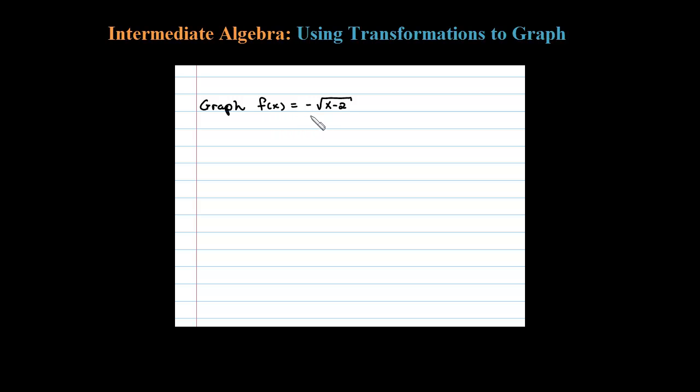Here we want to graph a square root function and we're going to use translations to do that. The first step is to identify your basic graph, and that is the square root function, square root of X. We know what that looks like.